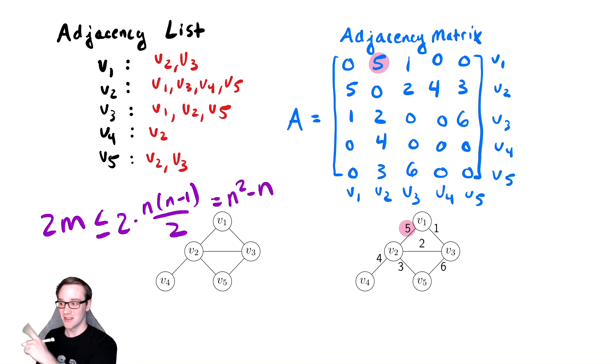Notice N squared, the number of vertices squared, is bigger than this. So no matter what, bar none, the adjacency list representation always stores less data, which is one of the biggest reasons we commonly use it.